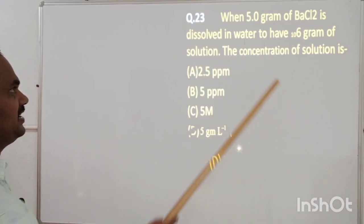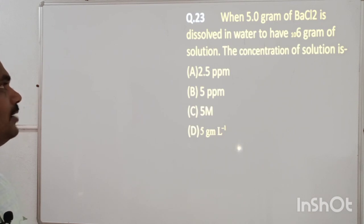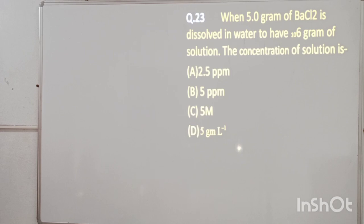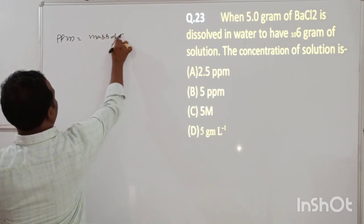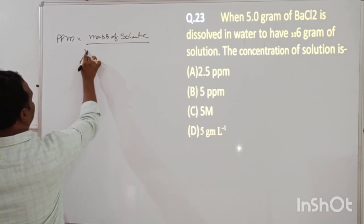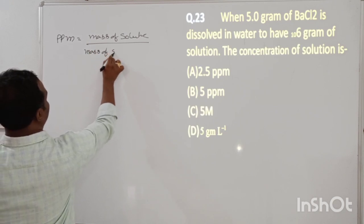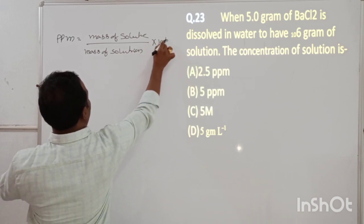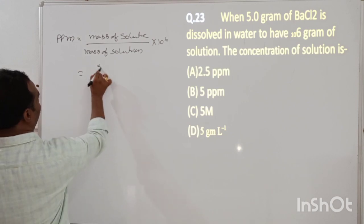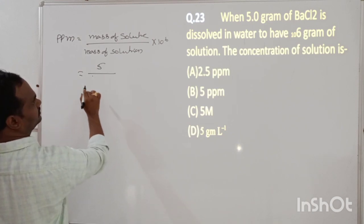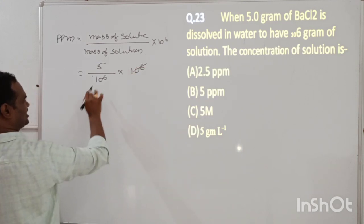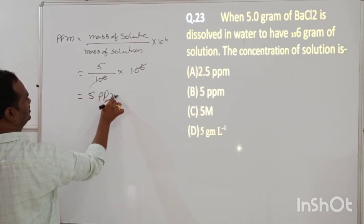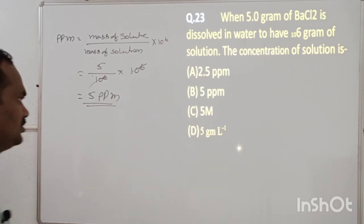Problem 23: 5 grams of BaCl₂ dissolved in water to have 10⁶ grams of solution. Find concentration in PPM. PPM = (mass of solute / mass of solution) × 10⁶ = (5 / 10⁶) × 10⁶ = 5 PPM. Correct option is B.